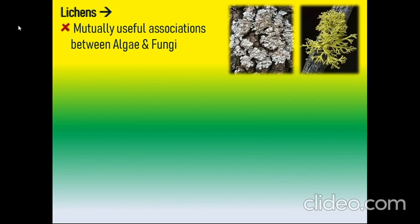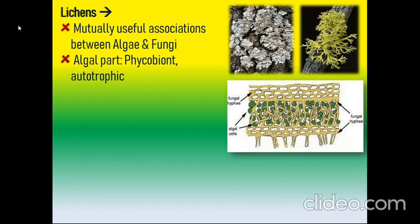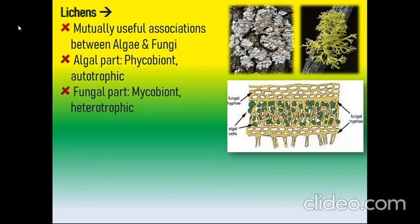Next, we will talk about lichens, which are a mutualistic association between algae and fungi. The algal part is known as the phycobiont, which is autotrophic — algae have chlorophyll and can make their own food by photosynthesis. The fungal part is known as the mycobiont, which is heterotrophic — fungi do not have chlorophyll and cannot make their own food, so they are dependent on the algal part for food.